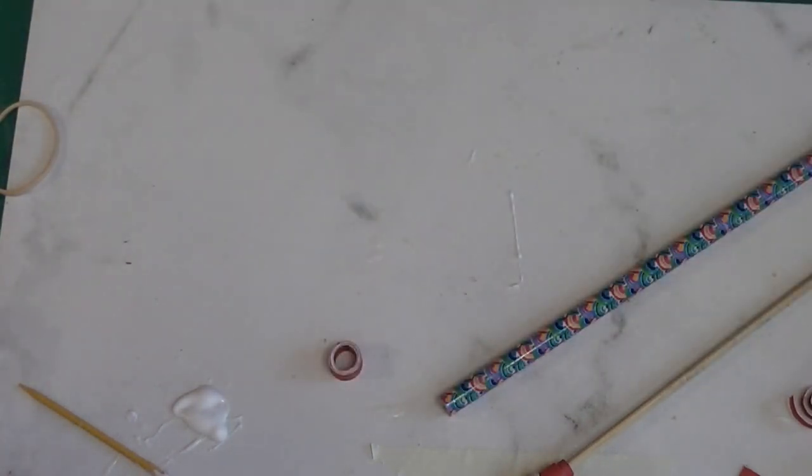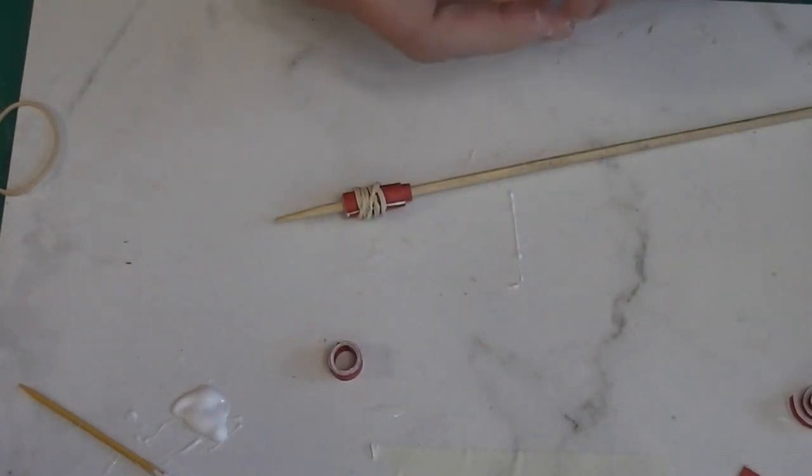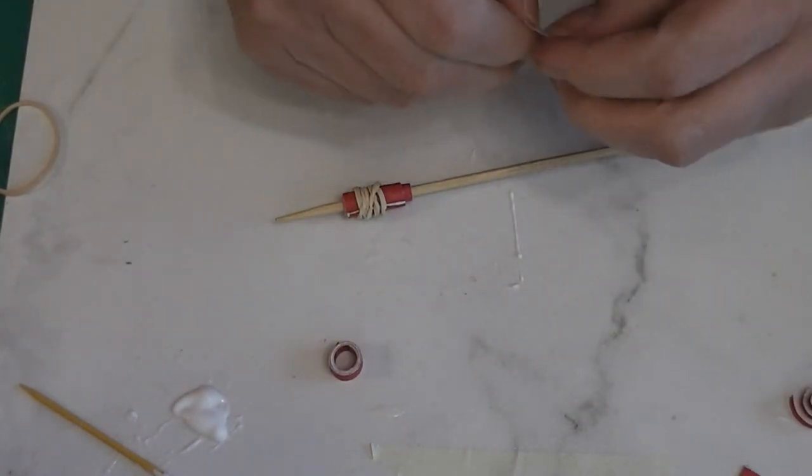Set that off to the side. Now this one is probably stuck down enough that it will stay. The glue doesn't have to be all the way dry for it to stay. The glue just has to get really sticky.